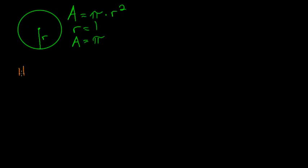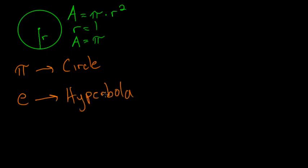So pi, you can think of as the circle constant, but e, you can think of as the constant for hyperbolas. So for instance, if I have the equation y is equal to 1 divided by x, its graph looks like this.